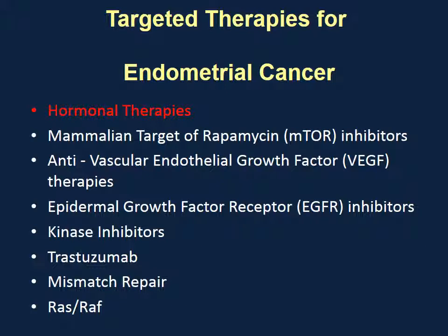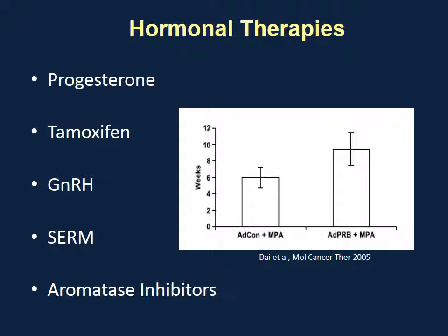Let's go through what targeted therapies and what targets we have. The old tried-and-true therapy for endometrial cancer is hormonal therapy. The endometrium responds to estrogen, which makes it grow, and then progesterone, which makes it regress. Similarly, with many endometrial cancers, hormonal therapies can be effective. Progesterone typically would make the endometrial cancer regress if it expressed hormone receptors. Hormonal therapies will lead to a response, and there are several we can use.